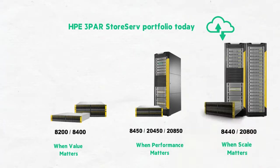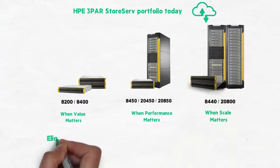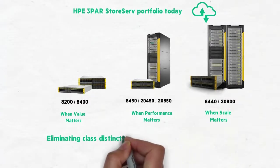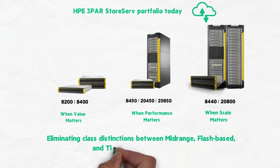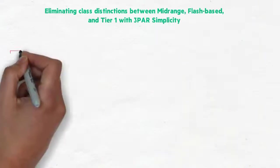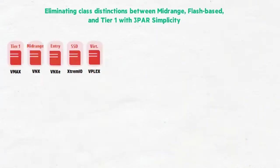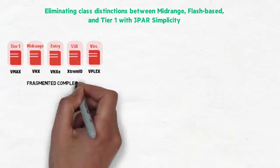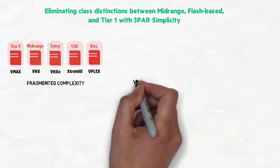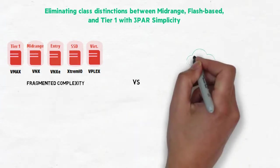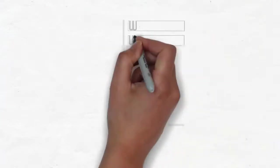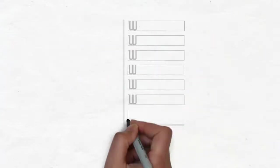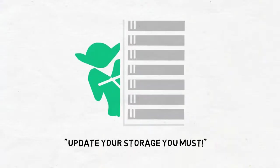With HPE 3PAR StoreServ, we've eliminated class distinctions between mid-range, flash-based, and tier 1 with a single architecture. Contrast our approach with EMC, who have 5 platforms to address what we can do with one. Add the Dell portfolio assuming the acquisition closes, and we're talking about complexity to the nth degree. And you don't need to be from a galaxy far, far away to heed the master's advice — update your storage, you must!